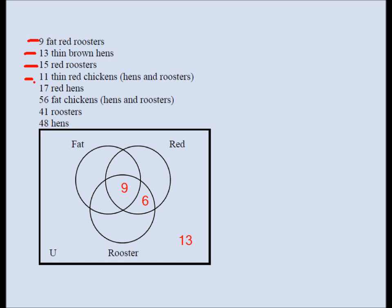Next: 11 thin red chickens. Be careful — chickens include hens and roosters. Red means inside the red circle; thin means outside the fat circle. That leaves two regions: thin red hens and thin red roosters. Since it says chickens (not specifying gender), both are included. We already placed 6 (thin red roosters), so the thin red hens region must be 5, since 5 plus 6 equals 11.